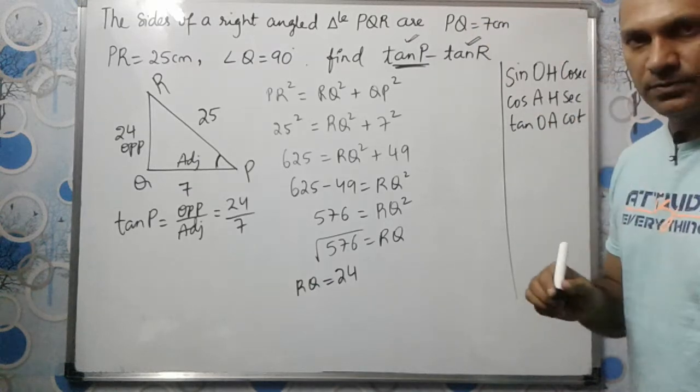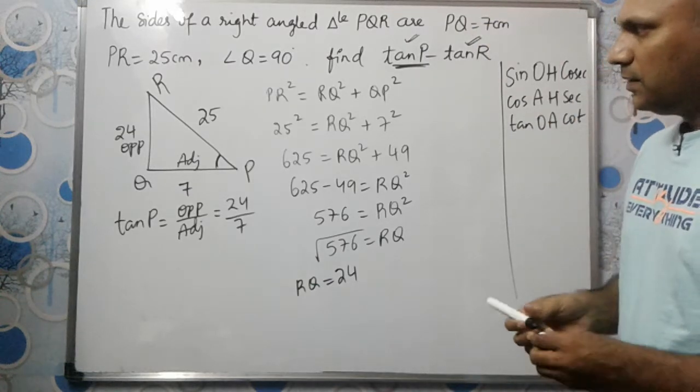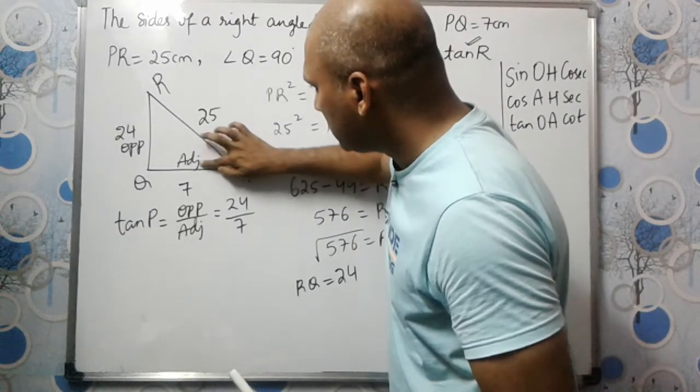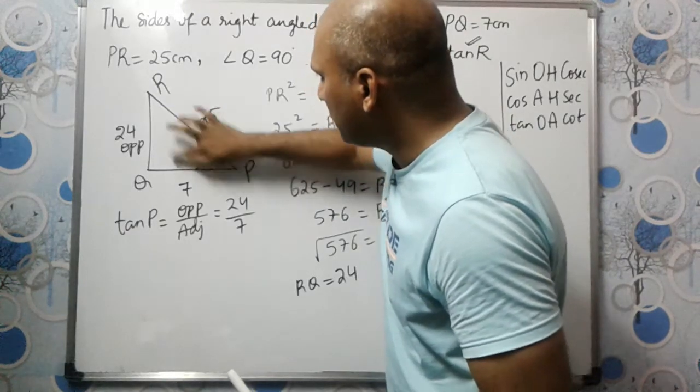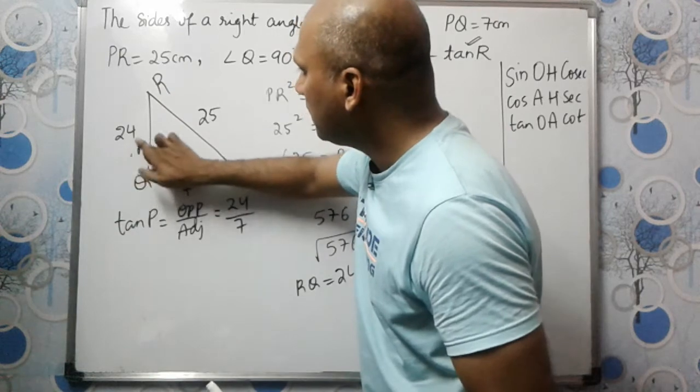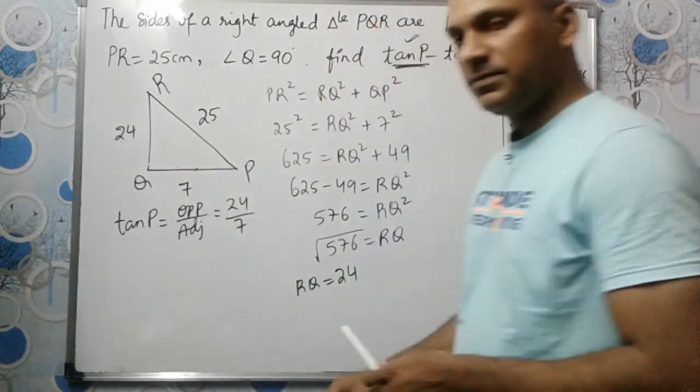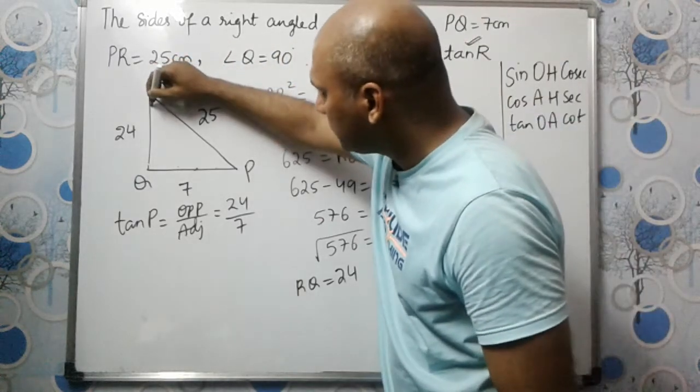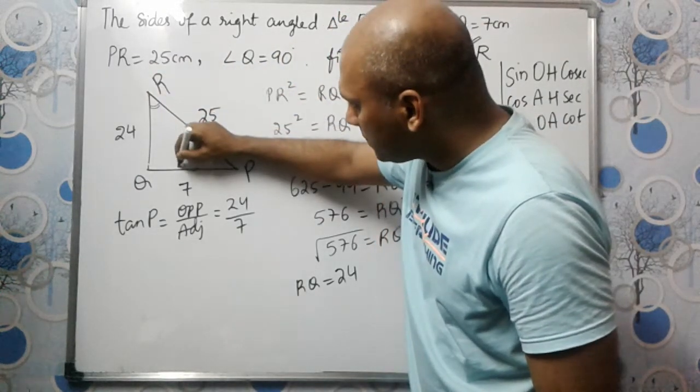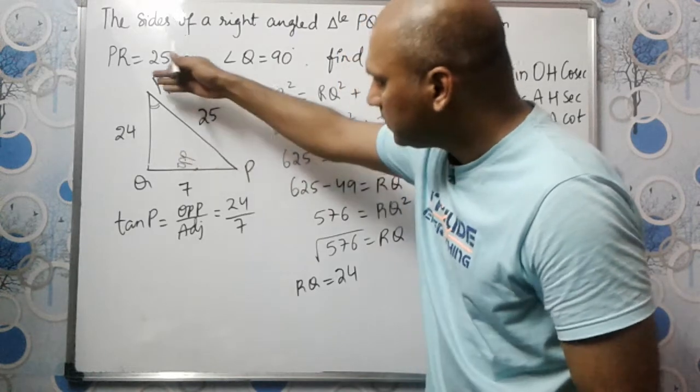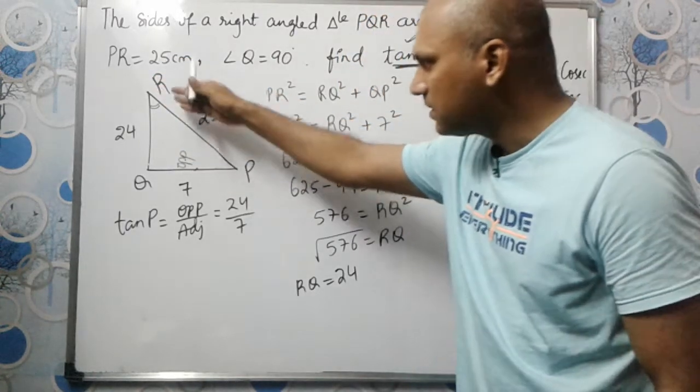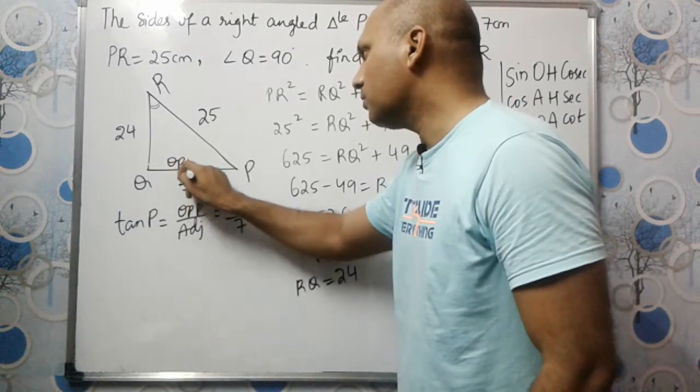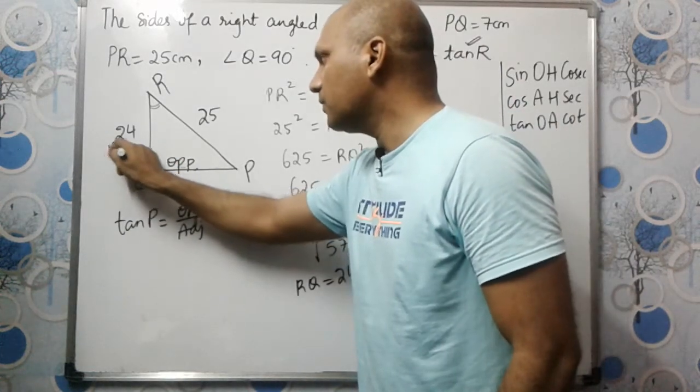We need to find tan R also. For angle R, the sides will be different. Now let us consider angle R. To this angle R, 7 will be the opposite side, and 24 will be the adjacent side.